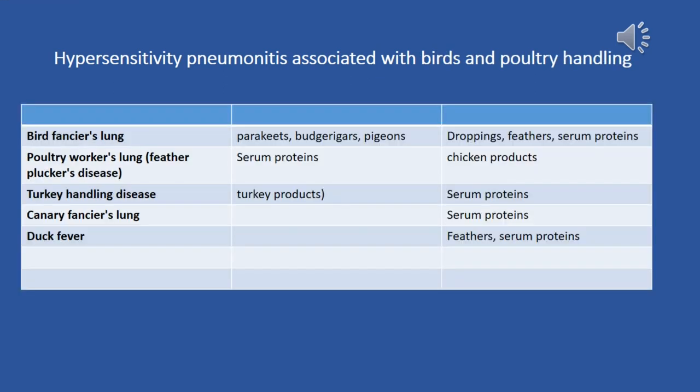Hypersensitivity pneumonitis associated with birds and poultry handling includes conditions such as bird fancier's lung, poultry worker's lung, turkey handling disease, canary fancier's lung, and duck fever.